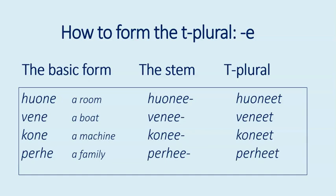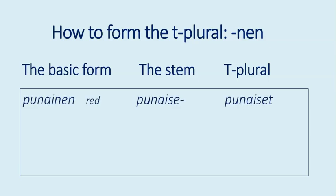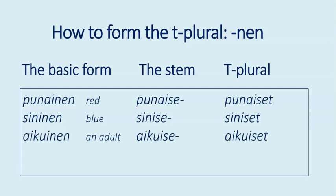Another common word type are words ending with -nen. The basic form, for example for the word 'red,' is punainen. The stem is punaise. What happens here is we take away -nen and replace it with -se, then add the T to the stem: punaiset. More examples: sininen, siniset; aikuinen, aikuiset; nainen, naiset.